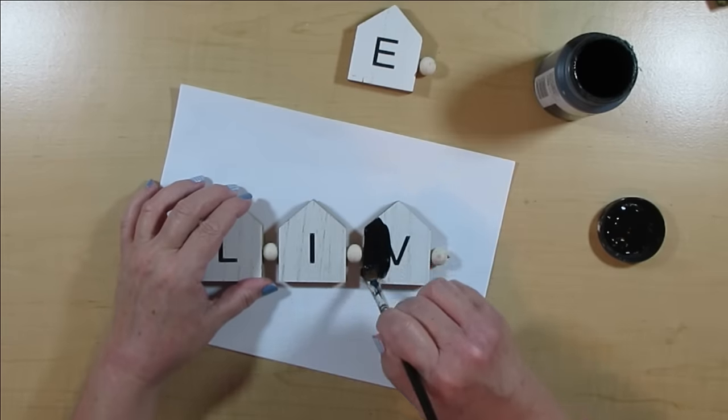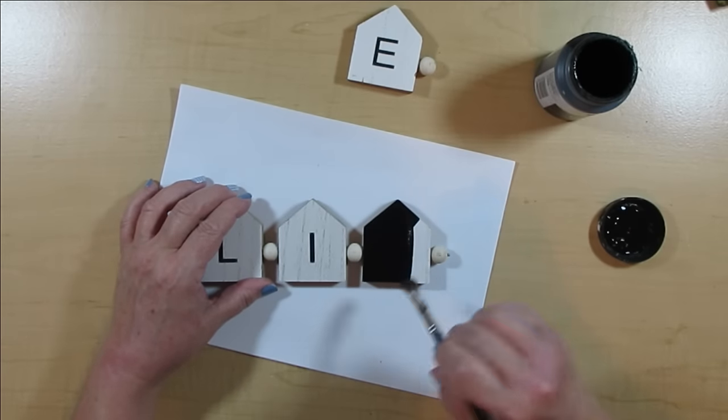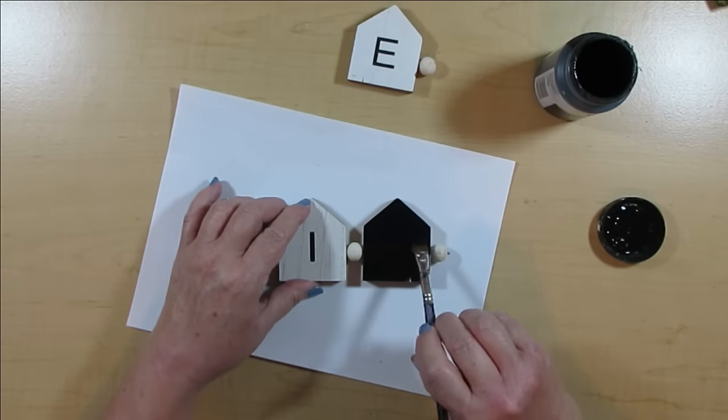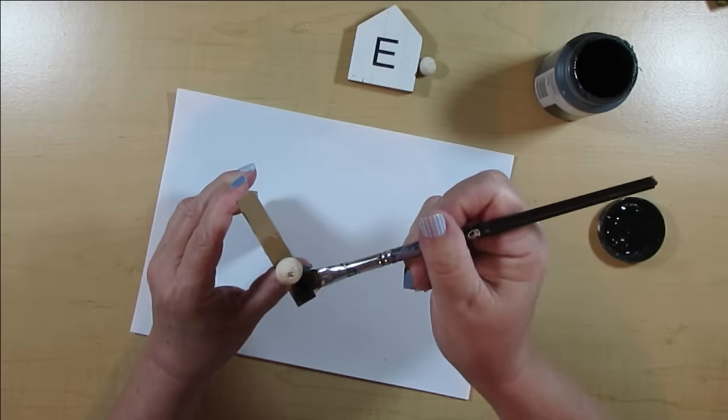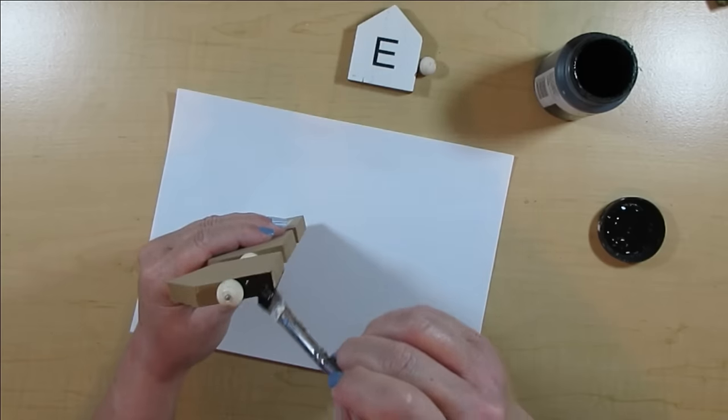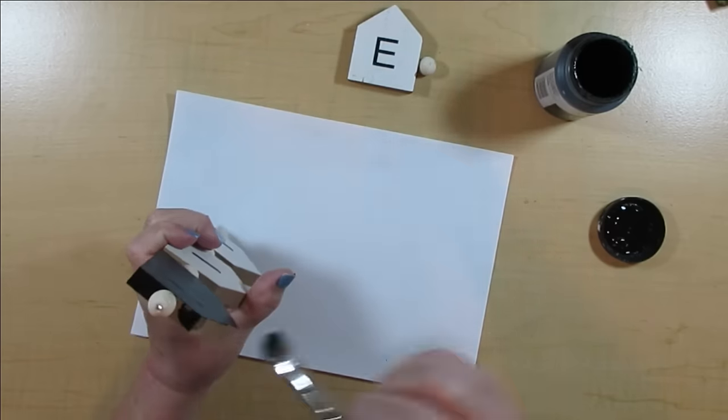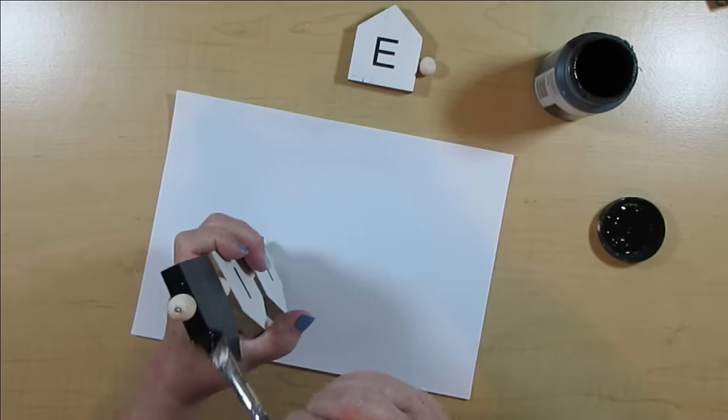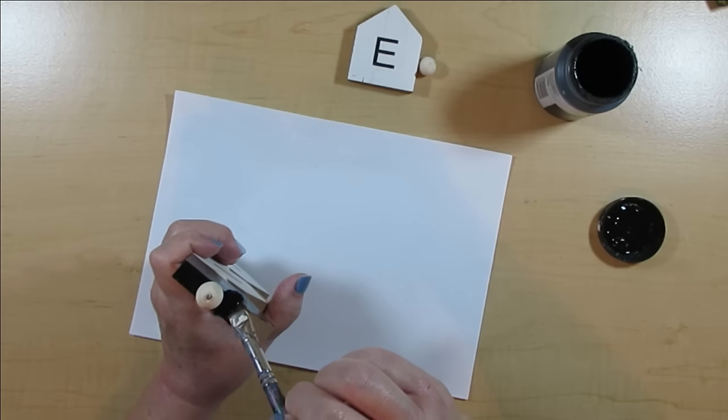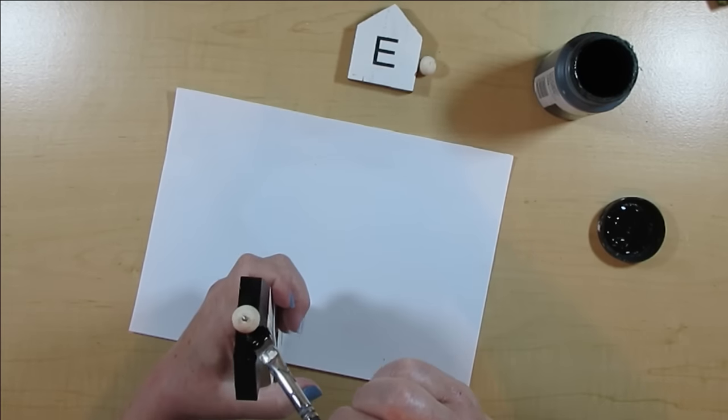I saw this cute little sign at the Dollar Tree and I couldn't resist picking it up, although I only wanted to use three of the four little houses. So I very carefully twisted the last one off and now they're going to get a coat of black chalk paint. Just one will do the trick, but I'm going to do the beads, the back, the front, the bottom, everything.